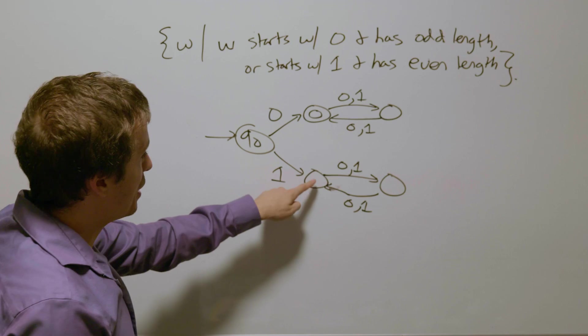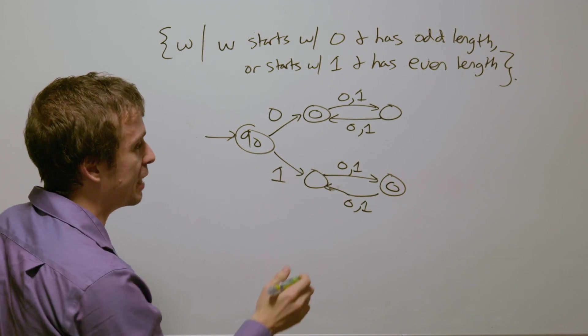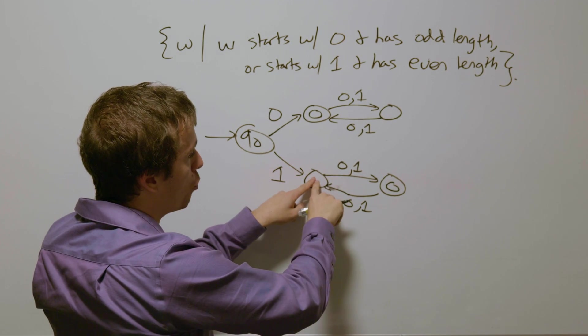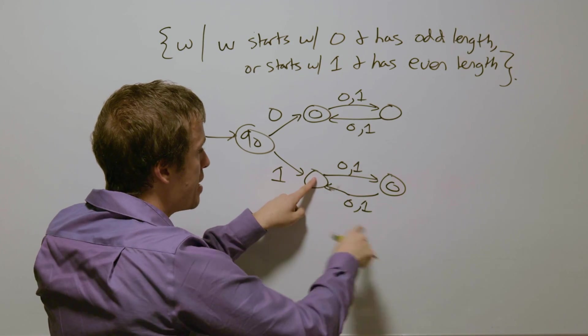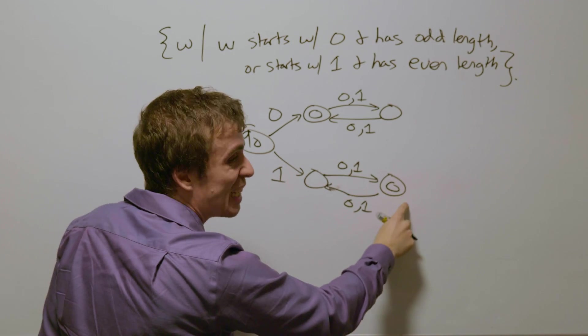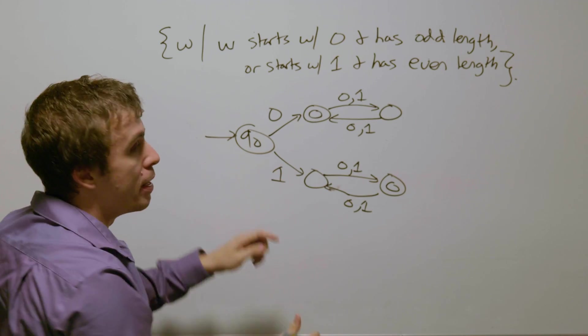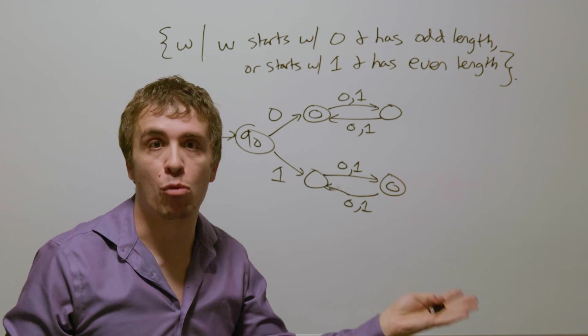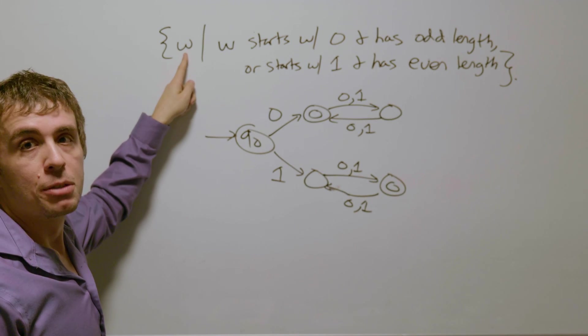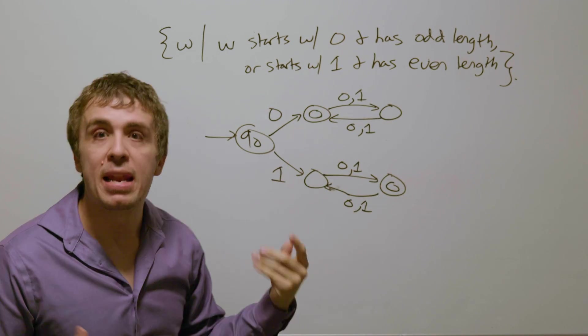So then what about down here? Well, this can't be a final state, but this one should be, for reasons that are somewhat obvious. Because if we've read a single 1 here, then by induction, we can prove that we have read an odd number, some odd number, to get to this state. And then if we read one more, that's even, and then we are in this state. And once we have read the initial 0 and 1, we don't care what the rest of the string is other than what its length is. So this is a minimum size DFA for all the strings, binary strings, that start with the 0 and have odd length, or start with the 1 and have even length.